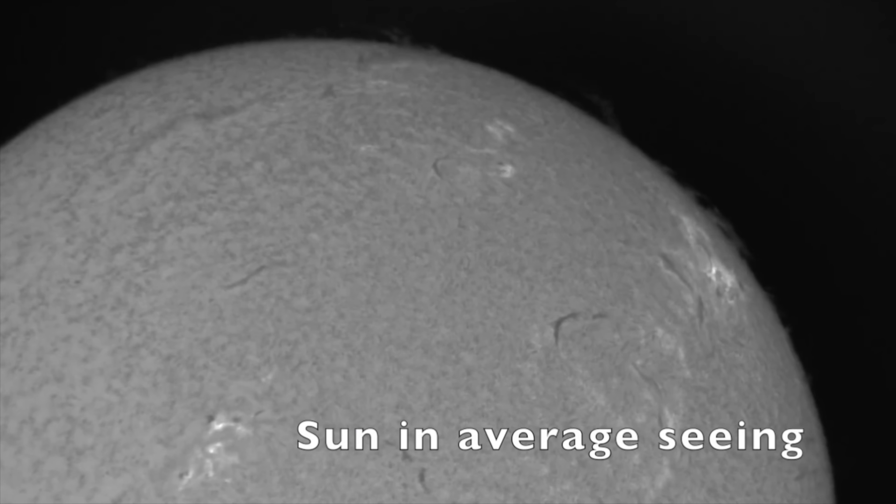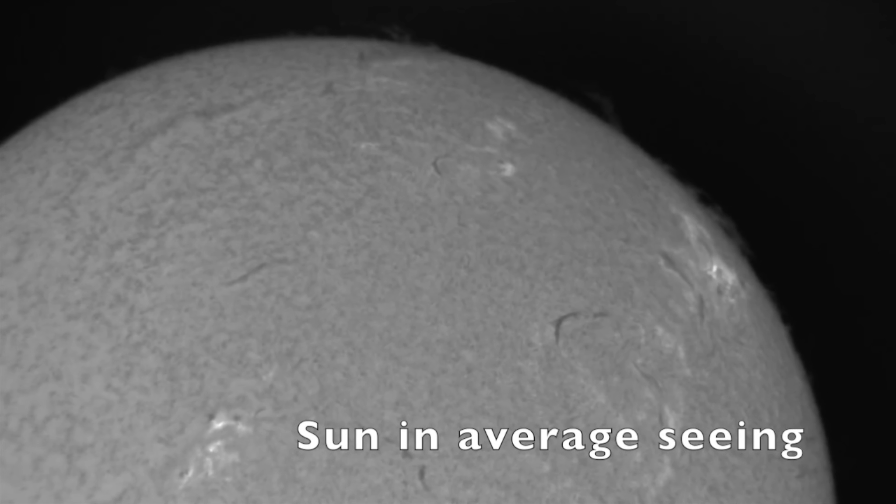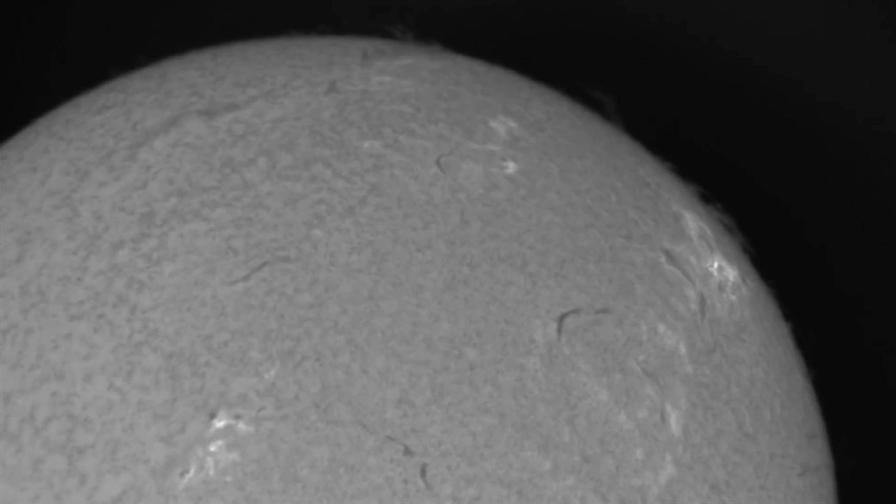What about seeing? Spectroheliographs do not do lucky seeing like etalon-based telescopes. They are therefore less forgiving than an etalon-based HA imaging rig. It's best not to attempt it unless seeing is decent to good. You can mitigate suboptimal seeing by taking multiple consecutive scans in the same direction once focus is achieved. At least five scans may be up to 20. This will be covered later in the video.